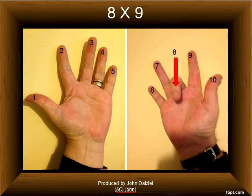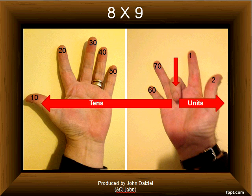Let's do another one. Let's do eight times nine. Obviously you bend over finger number eight. This time, the fingers and thumbs on the left are tens, fingers and thumbs on the right are units. So as you can see from the photograph above, eight times nine is seventy-two. It's as easy as that.